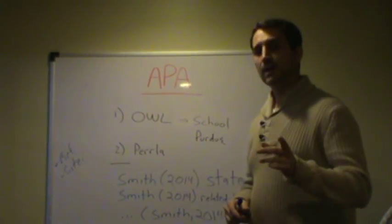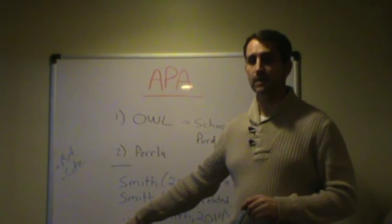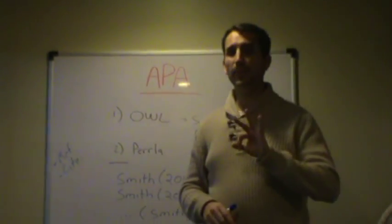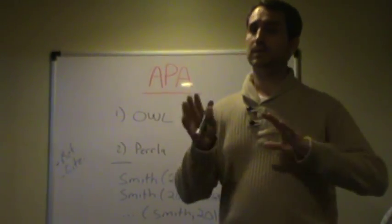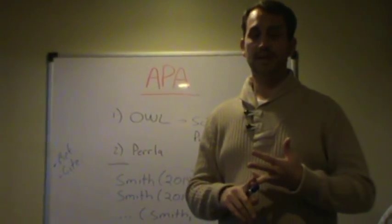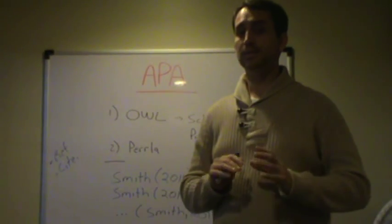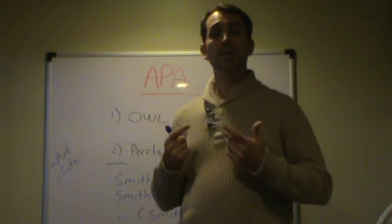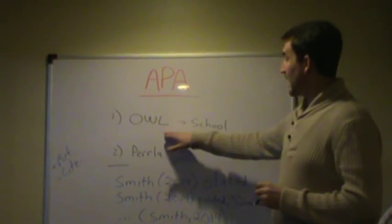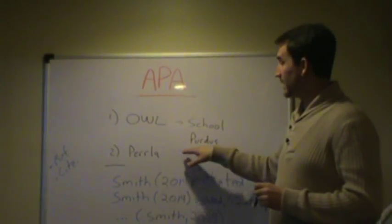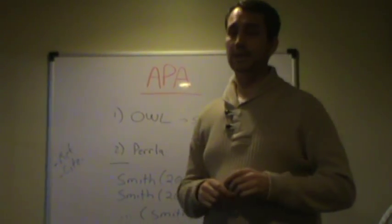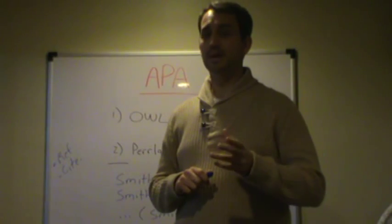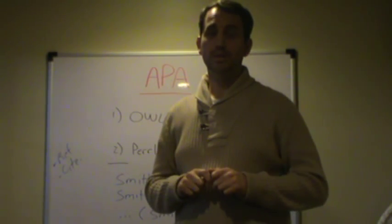That's how citations work. References are a whole different deal, and you'll need to use either Perla or the book for that. But the point is, citations are actually rather easy to do. For more specifics, you can go to the OWLs at the school, the Purdue OWL, or use Perla — there are a lot of different resources out there. At any point, feel free to contact me if you need any help. This is Dr. Pete, and if you need anything, please give me an email or a call. Thank you.